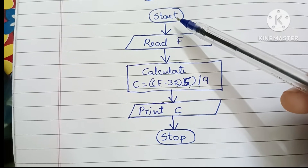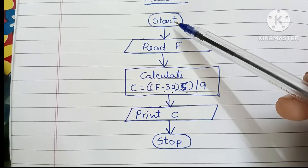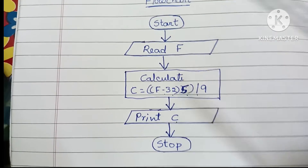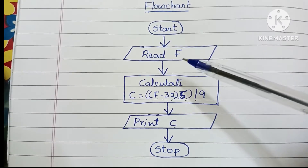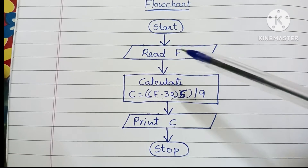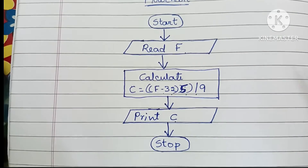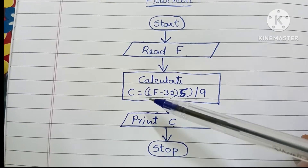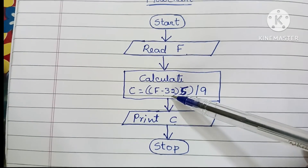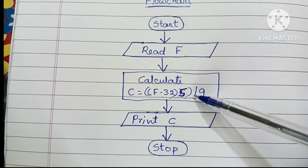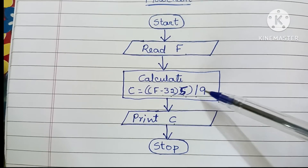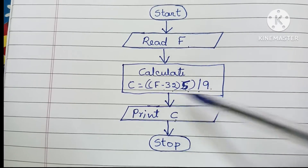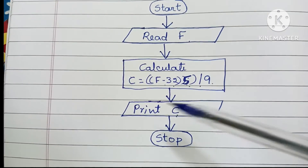To summarize the flowchart: it starts with the start statement inside an oval shape. Next, read the Fahrenheit value F, written inside a parallelogram. Then calculate C = (F - 32) × 5 / 9. Finally, display the output — output values are always written within a parallelogram shape.